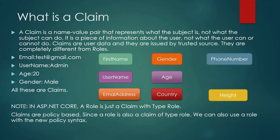Something interesting to note: in ASP.NET Core, a role is just a claim with type 'role'. Since a role is also a claim of type role, we can also use a role with the new policy syntax. So in our list, you can provide a role as a type of claim — 'role' is the name of the claim and the value is the actual role of that user, like 'admin'.